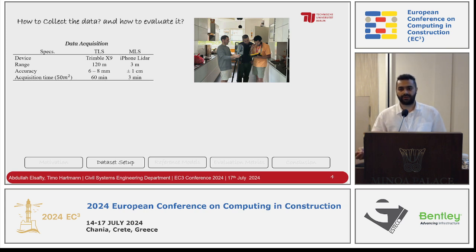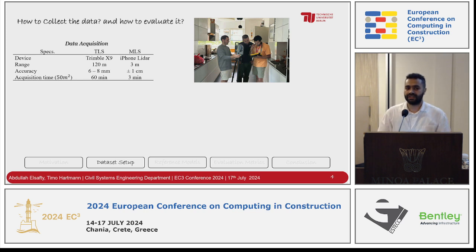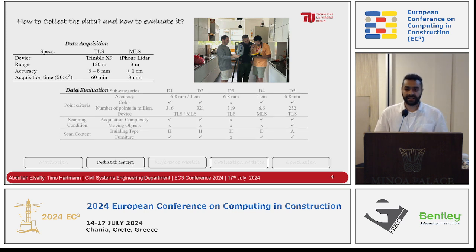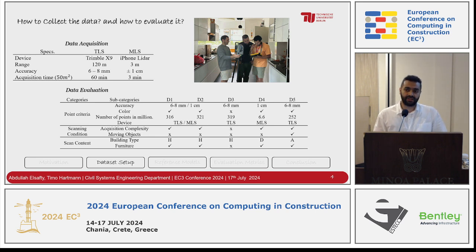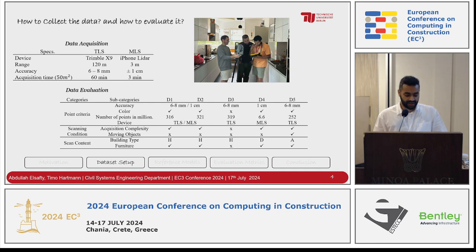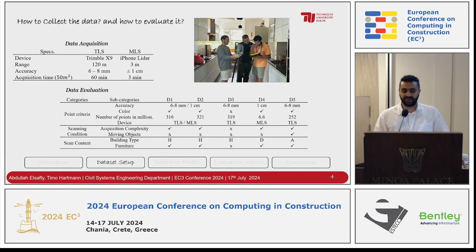To achieve a new contribution in data selection, we have data evaluation. We categorized the selection of data based on three criteria: point criteria (accuracy, color, number of points, device used), scanning conditions (acquisition complexity like lighting conditions, access to the area, moving objects), and scan content (building type and whether it contains furniture or not). We believe that by achieving this, we have a really good representative example of residential buildings.